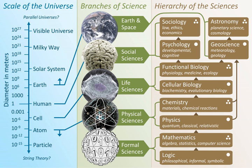Earth science, also known as geoscience, is an all-embracing term for the sciences related to the planet Earth. It is arguably a special case in planetary science, the Earth being the only known life-bearing planet. There are both reductionist and holistic approaches to Earth sciences. The formal discipline of Earth sciences may include the study of the atmosphere, hydrosphere, oceans and biosphere, as well as the solid Earth. Typically Earth scientists will use tools from physics, chemistry, biology, geography, chronology and mathematics to build a quantitative understanding of how the Earth system works, and how it evolved to its current state.